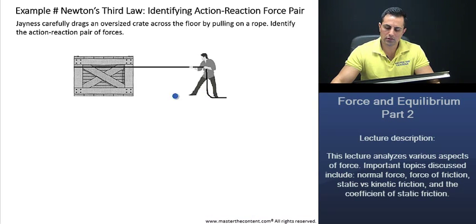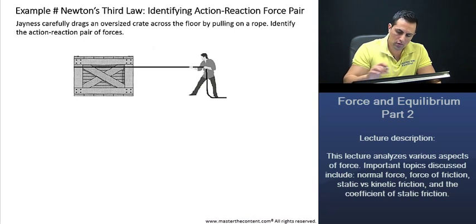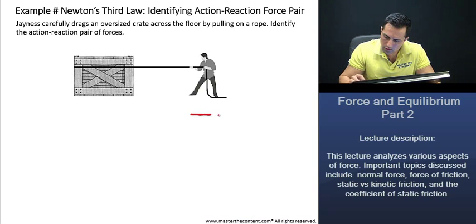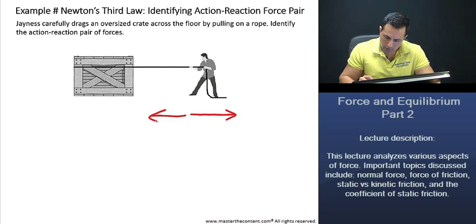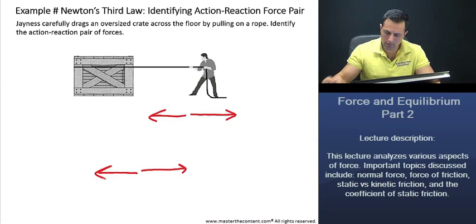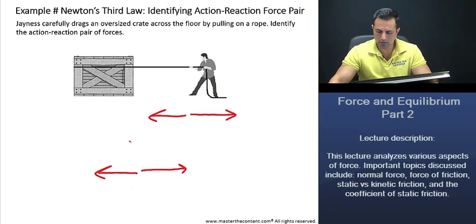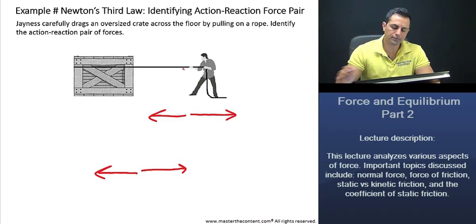We have three objects here that we need to discuss. We have Janus, we have the rope, and we also have the crate. There's contact here between Janus and the rope, and I'm referring to the contact here from the rope and the crate. So this point here is talking about the rope and the crate, and this point here is talking about Janus and the rope.